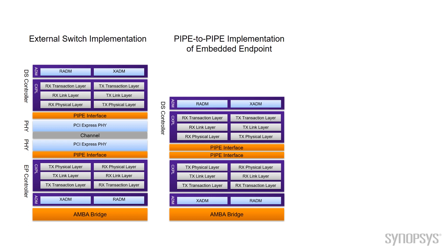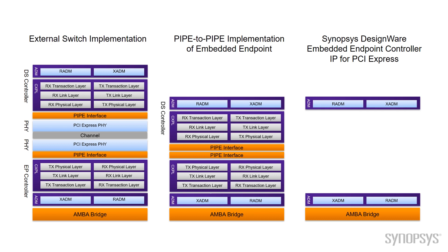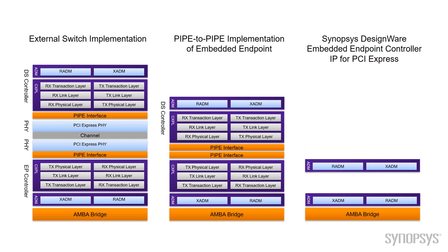That's a reasonably good implementation, but what if we could take it further? Let's take a look at what we've done at Synopsys. We take this and rip out all the redundant logic that we don't need, essentially completely compressing together what we need from the downstream port with what we need from the endpoint, to create a truly optimized single embedded endpoint solution. And that's not drawn to scale, but it almost is to scale, surprisingly, when you look at some of the numbers.